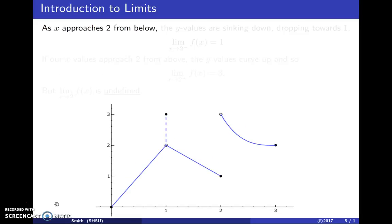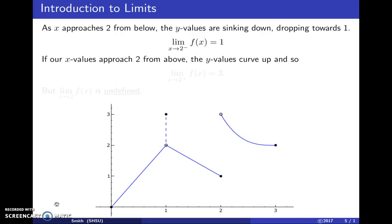Let's move over and look at x values near two. As x approaches two from below or from the left, as we walk along the x axis from the left of two towards two, then the y values are dropping down to one. So the limit as x approaches two from the left, from smaller x values, is one.